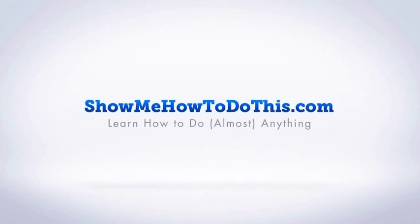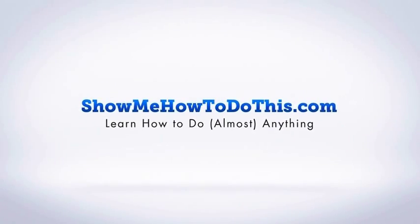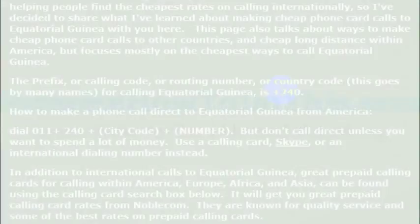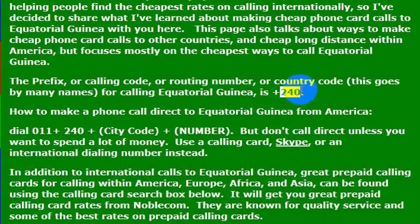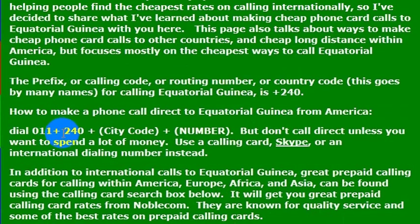Calling Equatorial Guinea is very simple. All you do is know the country code for calling there, which is 240. From any phone that is internationally enabled to make an international phone call from the United States, you would simply dial 011, then the country code for Equatorial Guinea, which is 240 — so 011, 240.